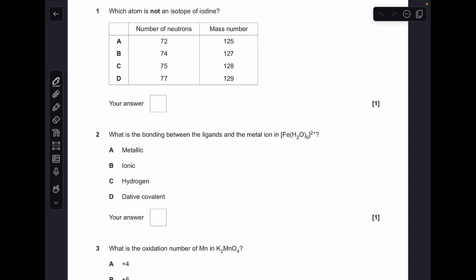Okay so let's make a start. Isotopes of iodine all have 53 protons, so basically the number of neutrons plus the number of protons plus 53 has to add up to the mass number and they all do except D. So that was the answer.